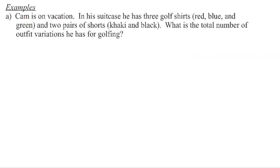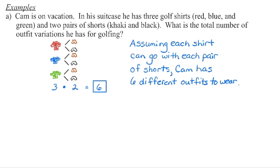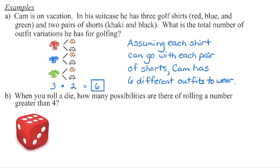If Cam is going on vacation and he packs three golf shirts — one red, one blue, one green — and two pairs of shorts — one khaki and one black — what is the total number of outfit variations he has for golfing? We have three different shirt choices, and each shirt can be paired with either khaki or black shorts. Multiplying three times two, we end up with six different outfits: red and khaki, red and black, blue and khaki, blue and black, green and khaki, or green and black.